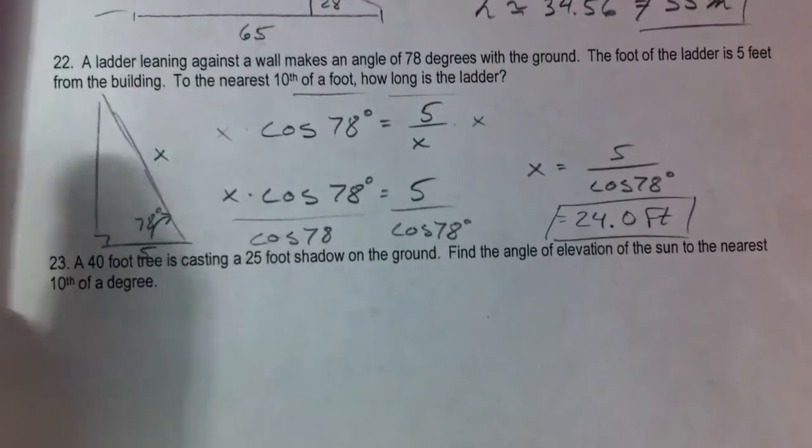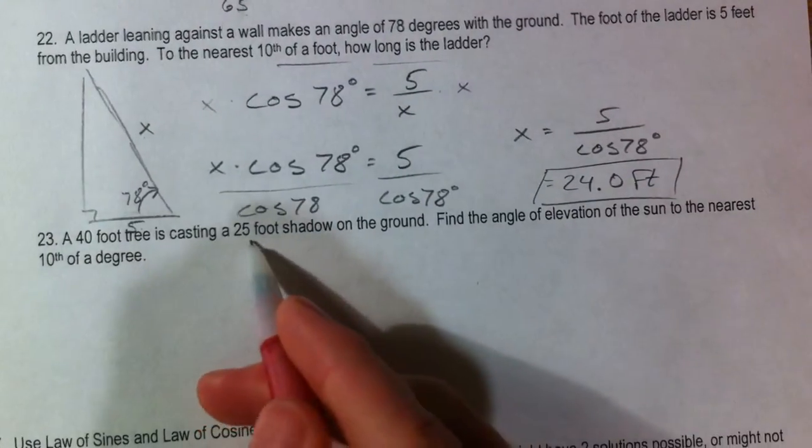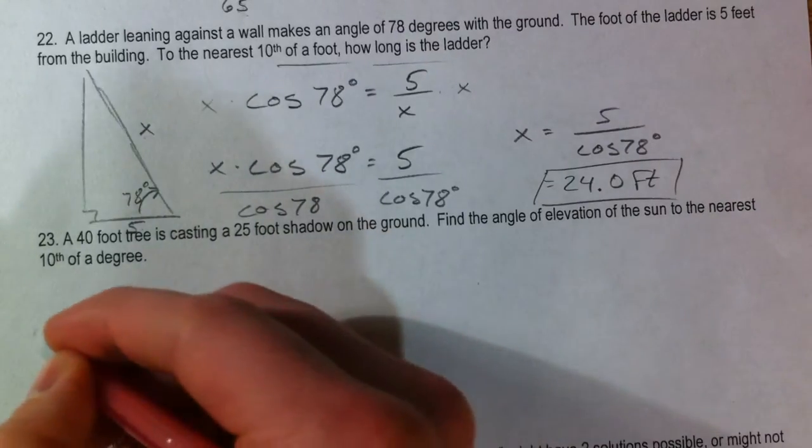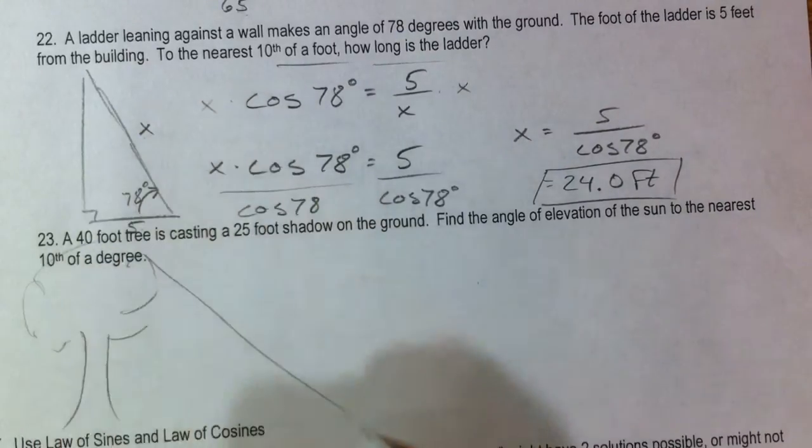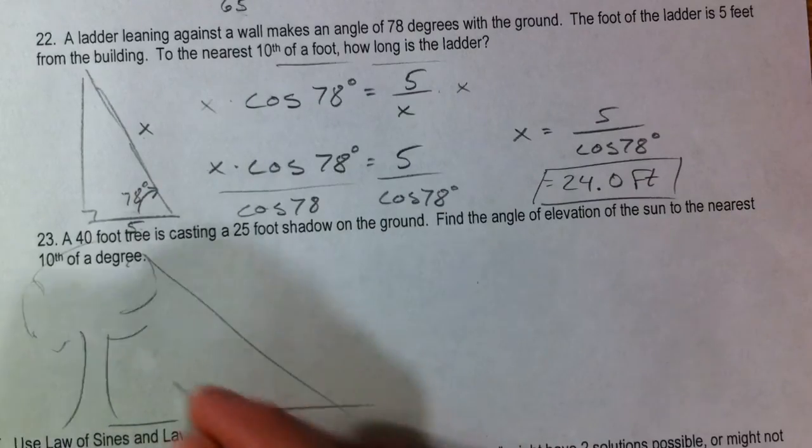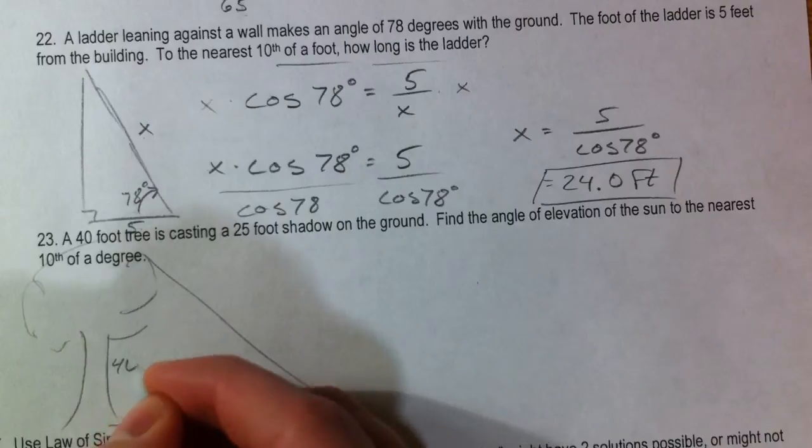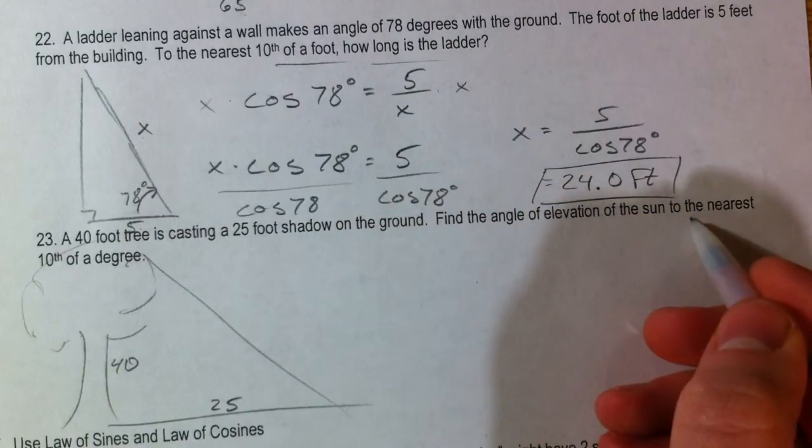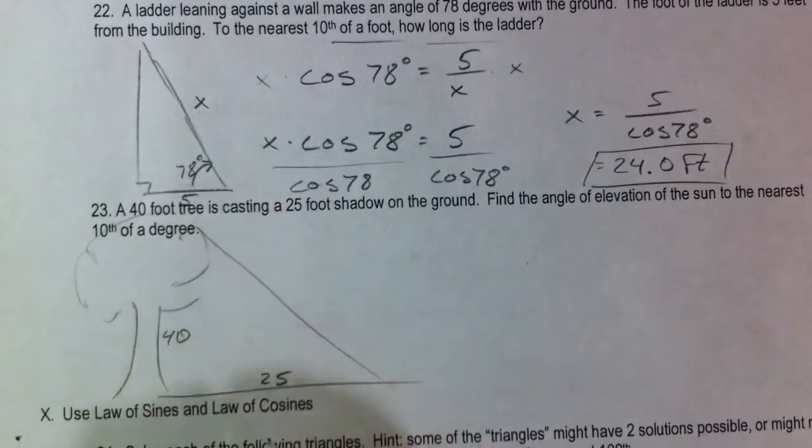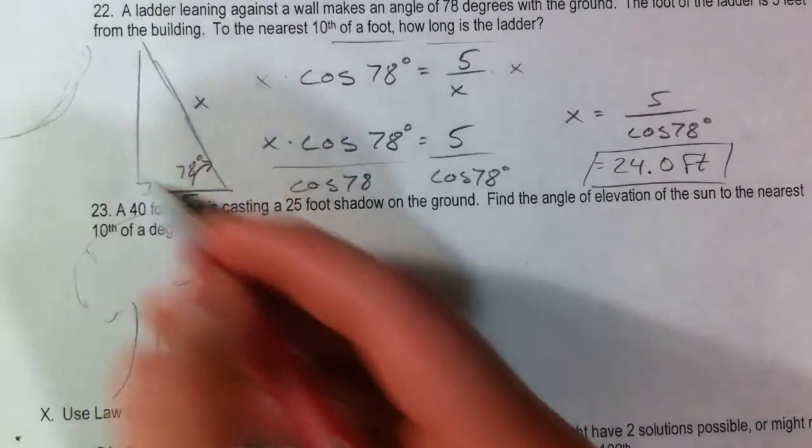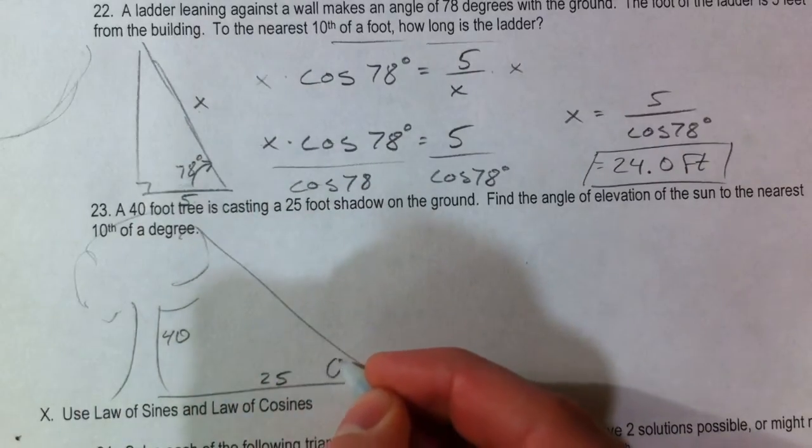Alright, 40 foot tree is casting a 25 foot shadow. So we've got a tree, 25 foot shadow, a 40 foot tree. Find the angle of elevation of the sun. So the sun is going to be over here someplace. And we want to find the angle of elevation to the sun, so this angle right here.